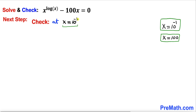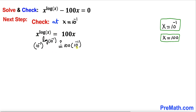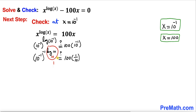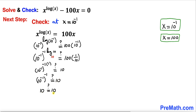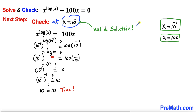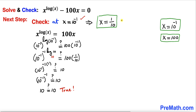Now let's check the solution x equals 10 to the power of negative 1. Replacing all x values with 10 to the negative 1 and applying the power rule, we move the exponent negative 1 to the front. The right hand side becomes 1 over 10. Since log(10) with base 10 equals 1, after simplification the left hand side equals 10 and the right hand side equals 10 — a true statement. So x equals 10 to the negative 1 is a valid solution, also written as x equals 1 over 10.